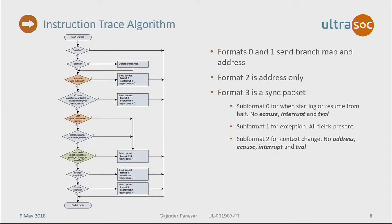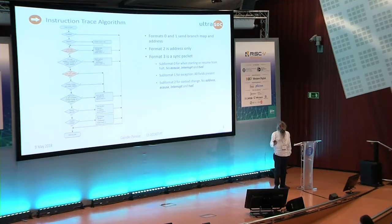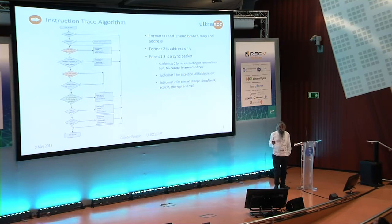Here's the algorithm — I don't propose to go through it but essentially it's very simple. You sit there going through, and when you see a branch you update a bit vector to say whether it's taken or not taken, and when that's full you send it out. The only time you need to worry about addresses is when there's some unpredictable discontinuity to the PC, which is introduced by exceptions or indirect jumps. There are four message formats for different scenarios in our encoder. You can read through the flowchart because it will be on the slides.